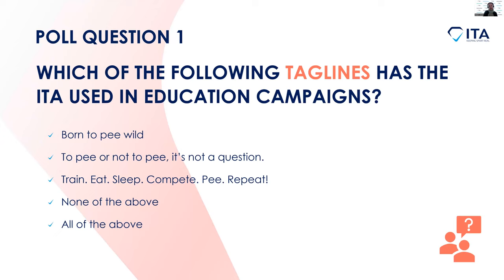Let's get thinking about a very important liquid in the doping control process — yes, that's right, pee. To start with, a fun poll question all about P. Appearing on your screens now is the first poll question of the day: which of the following taglines has the ITA used in education campaigns? You can vote for as many as you like. Options are: 'Born to pee', 'Wild to pee or not to pee, it's not a question', 'Train eat sleep compete pee repeat', 'None of the above', or 'All of the above'.